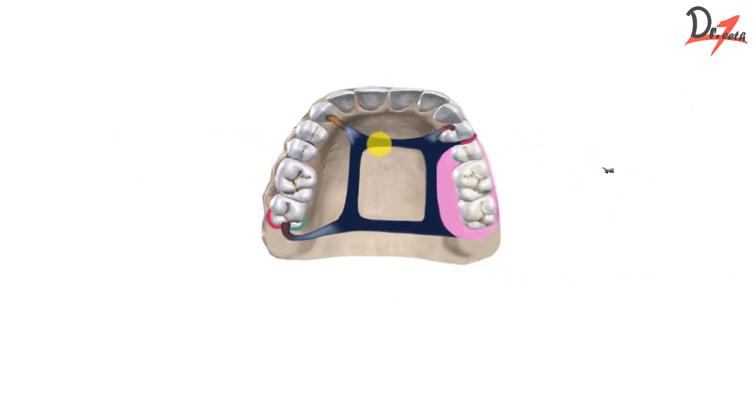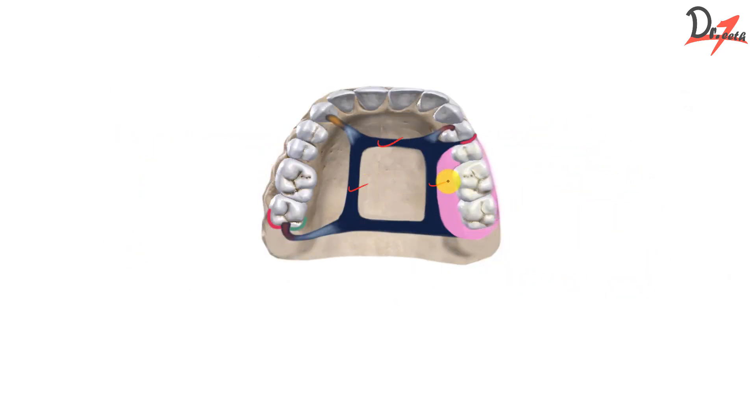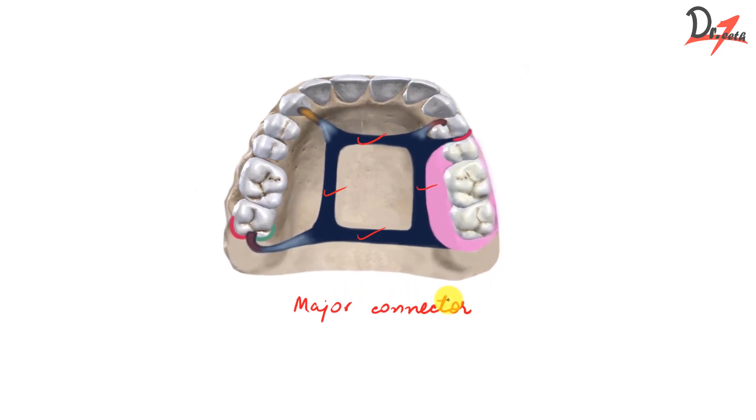Now let us summarize this. We have the major connector, which is the framework or the foundation of the cast removable partial denture. And then we have this in light blue, all here and here. That is the minor connector. And we learned that the major connector connects one side of the component to the other side of the component. And the minor connector connects the major connector with the rest of the component.